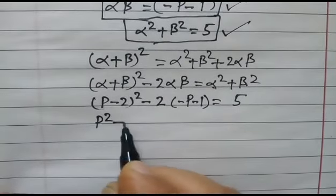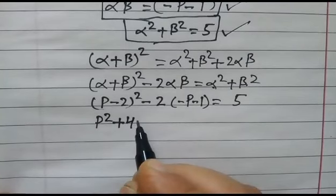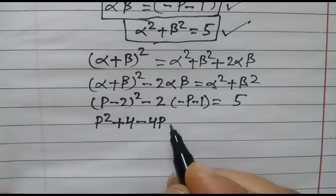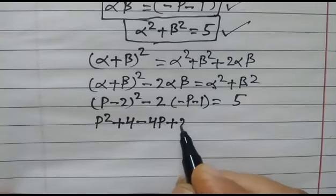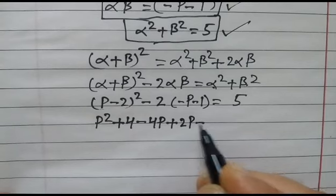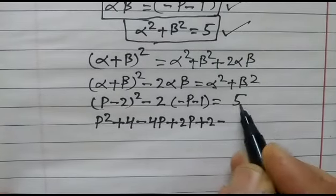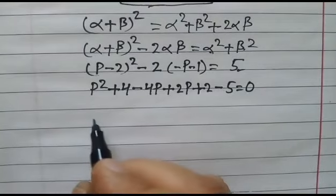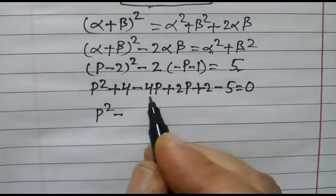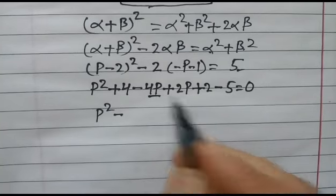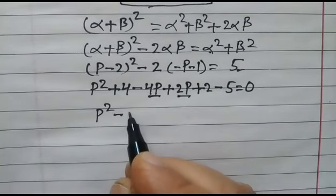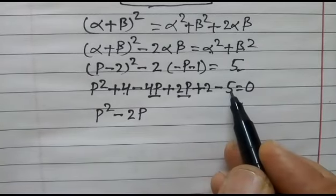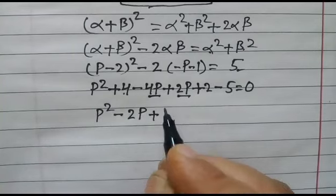Expanding: p² + 4 - 4p. Now opening the bracket: plus 2(p+1), so p² - 4p + 4 + 2p + 2 - 5 = 0. Simplifying: p² - 2p + 1 = 0, which gives us (p-1)² = 0.